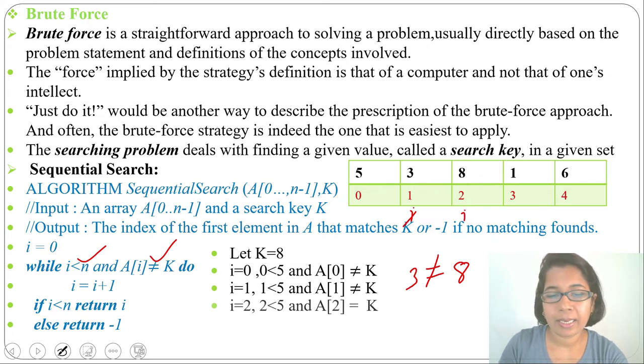Next, 2 is less than n. Yes, 2 is less than 5. And, A[2]. What is A[2]? 8. So, compare 8 with the key. 8 equals to 8. So, this condition doesn't satisfy. We'll exit from the loop.